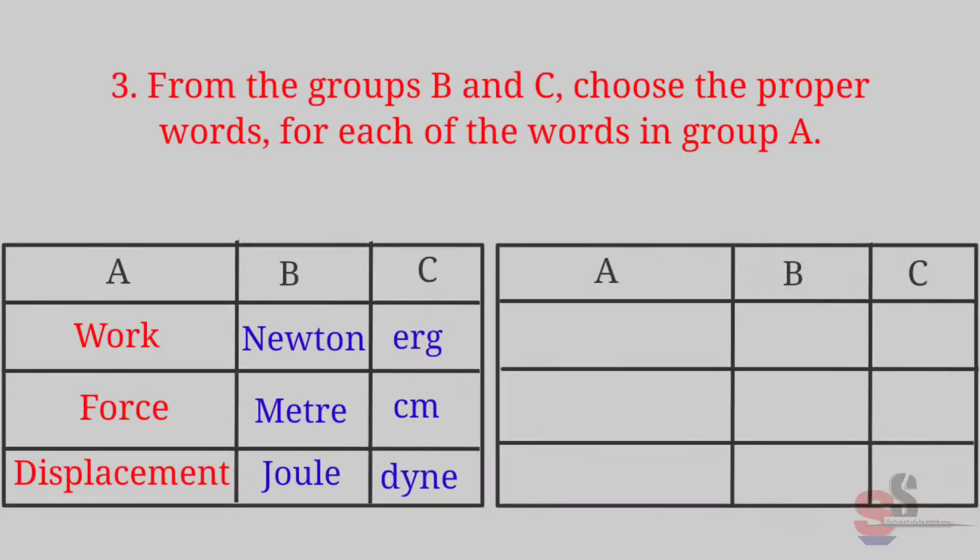Question third: From the groups B and C, choose the proper words for each of the words in group A. Group A is work, force, displacement. Now in B group: Newton, meter, joule. And in C group there are words: erg, centimeter, and dyne. Now we will see proper words for group A.